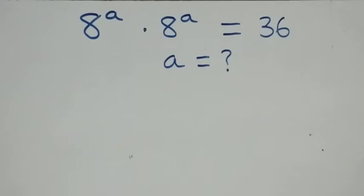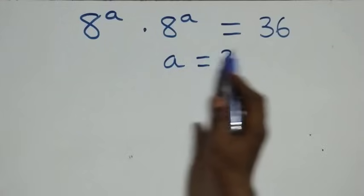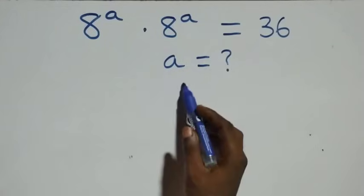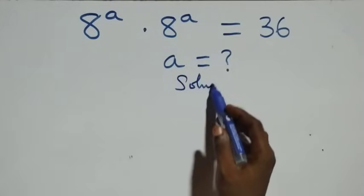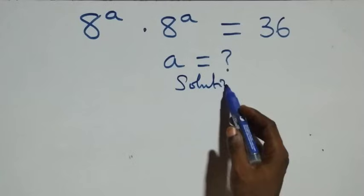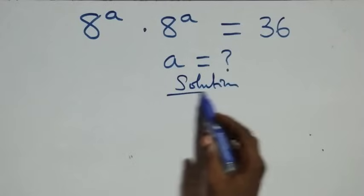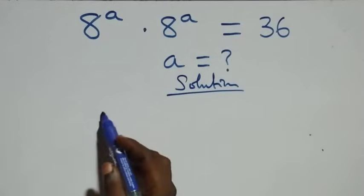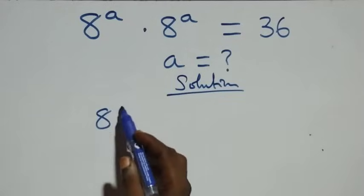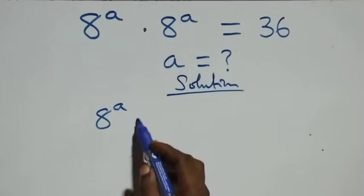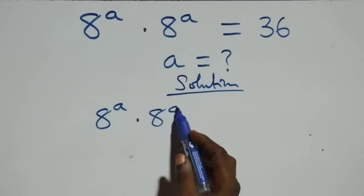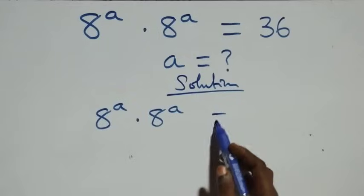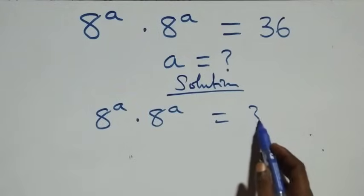Hello, you're welcome. How to solve this nice exponential equation. What we have here is 8 raised to power a times 8 raised to power a equals 36.